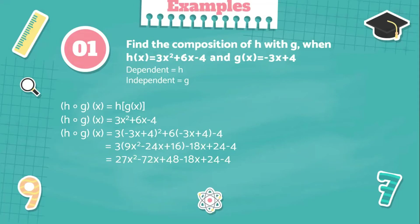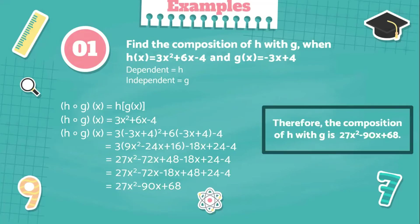The next thing is to group them according to similar terms: 27x squared minus 72x minus 18x plus 48 plus 24 minus 4. Since these are already grouped, the answer will be 27x squared minus 90x plus 68. Therefore, the composition of h with g is 27x squared minus 90x plus 68.